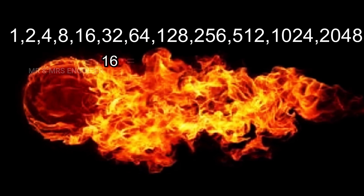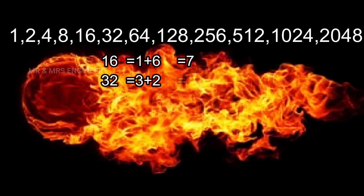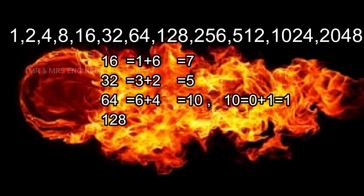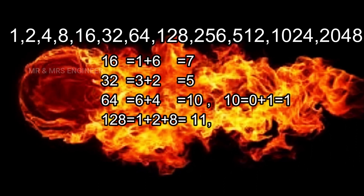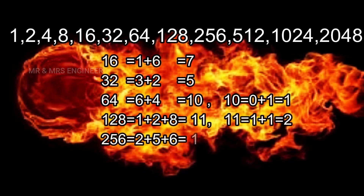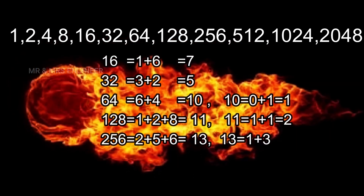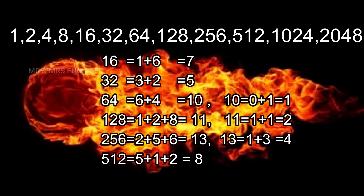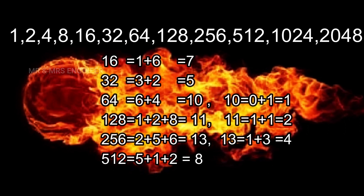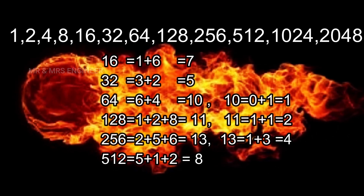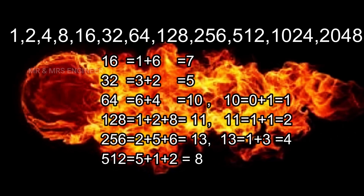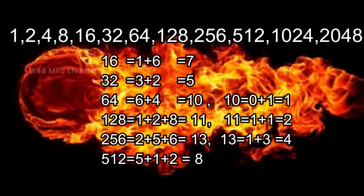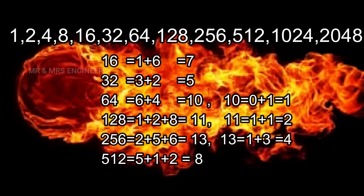Now, there is 14 — that means 1 plus 6 is equal to 7. That means 32, so 3 plus 2 is equal to 5. That means 64: 6 plus 4 is equal to 10, and 1 plus 0 is equal to 1. Now, 128 is equal to 2, 256 is equal to 4, 512 is equal to 8.